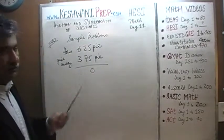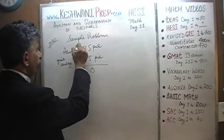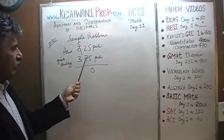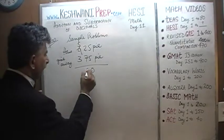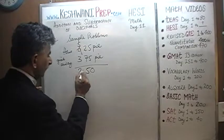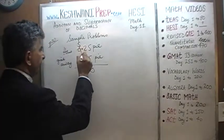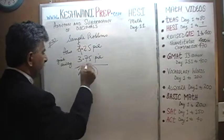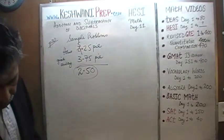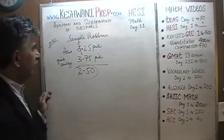We cannot subtract 7 from the 2. So we borrow 1 from this guy. 6 becomes 5, and this becomes 12. 12 minus 7 is 5. And then 5 minus 3 is going to be 2. And now we go and put in our decimal. Right here. The answer is 2 and a half.